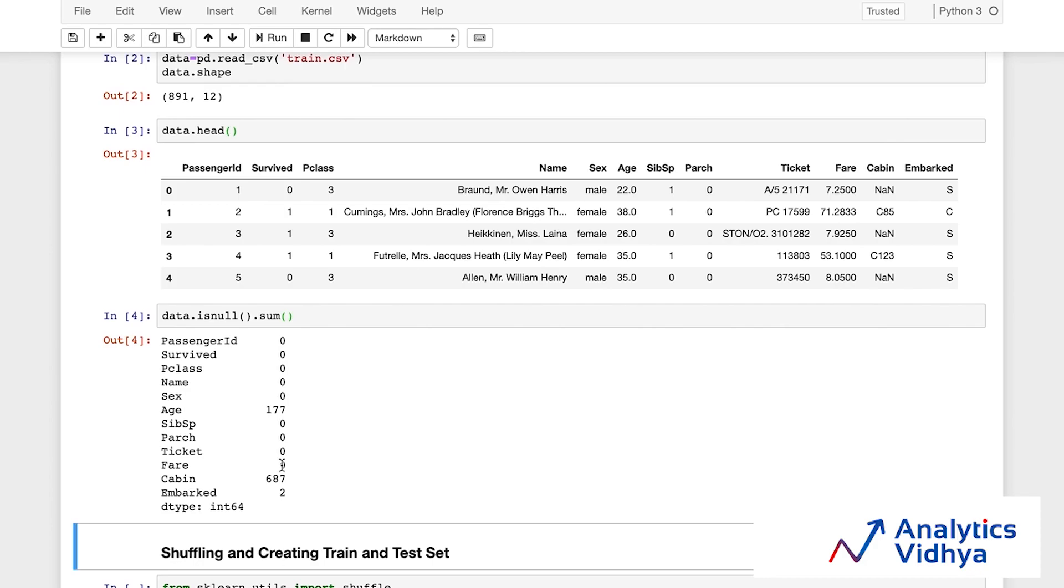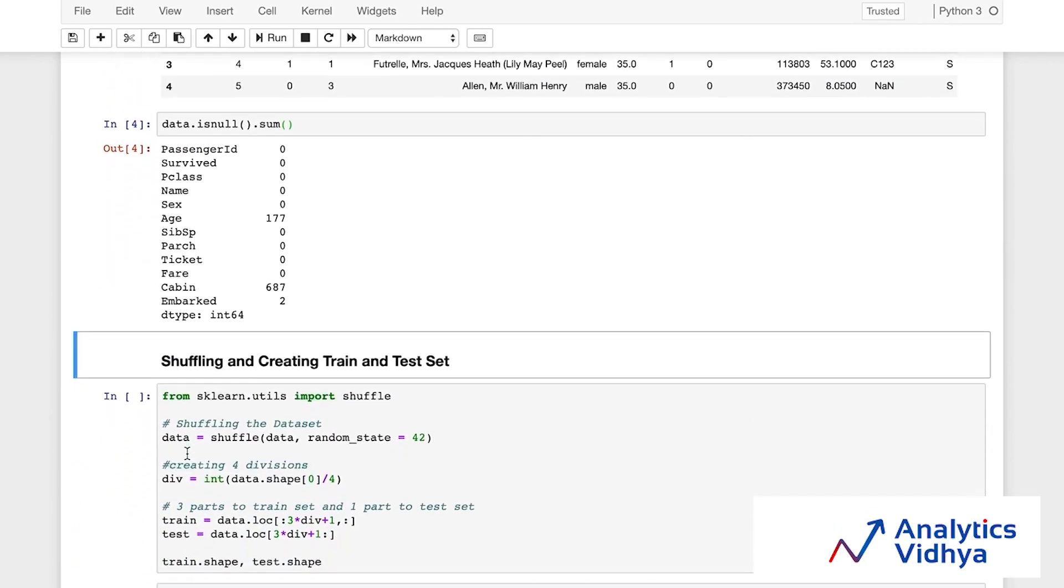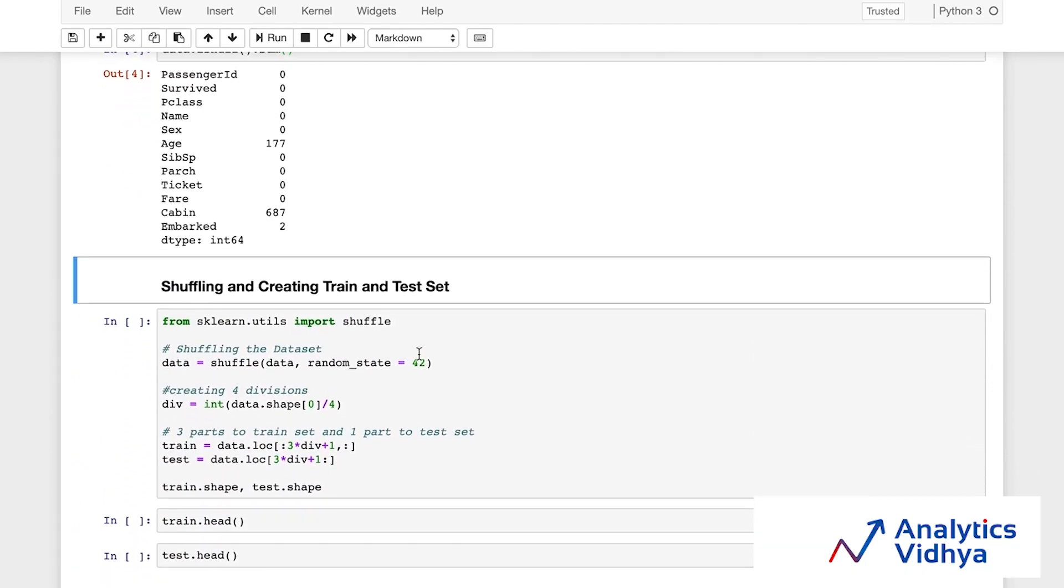Let me quickly look at the missing values. There are 177 missing values on age, 687 missing values on cabin. As you can see, cabin has 687 missing values out of 891. Not sure how much value that will add.